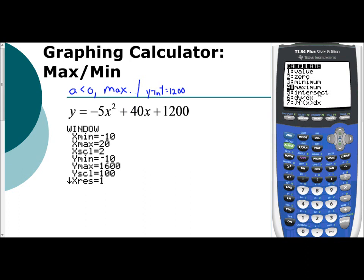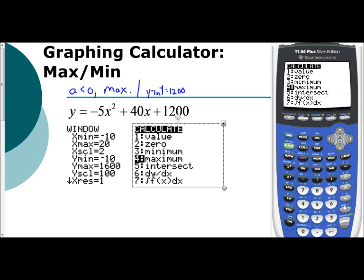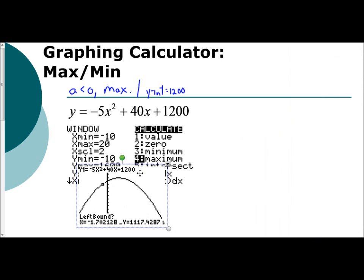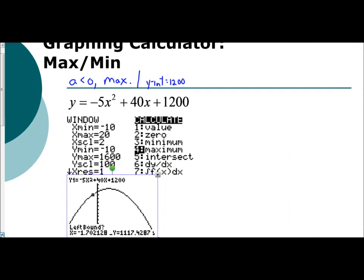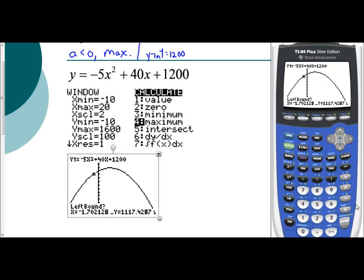We're only going to do an example of a maximum, but the steps we use for this are going to be the same as if we did one involving a minimum value. So whatever we're doing here works for both of them. So I'm going to choose my max option, option four. Now it's asking you left bound. What left bound means is to mark a point to the left of the vertex. Anywhere to the left. My vertex could be here, could be here, could be here. So I'm just going to keep using my left arrow and going beyond that vertex. So this is a safe distance away. Mark a point by hitting enter.